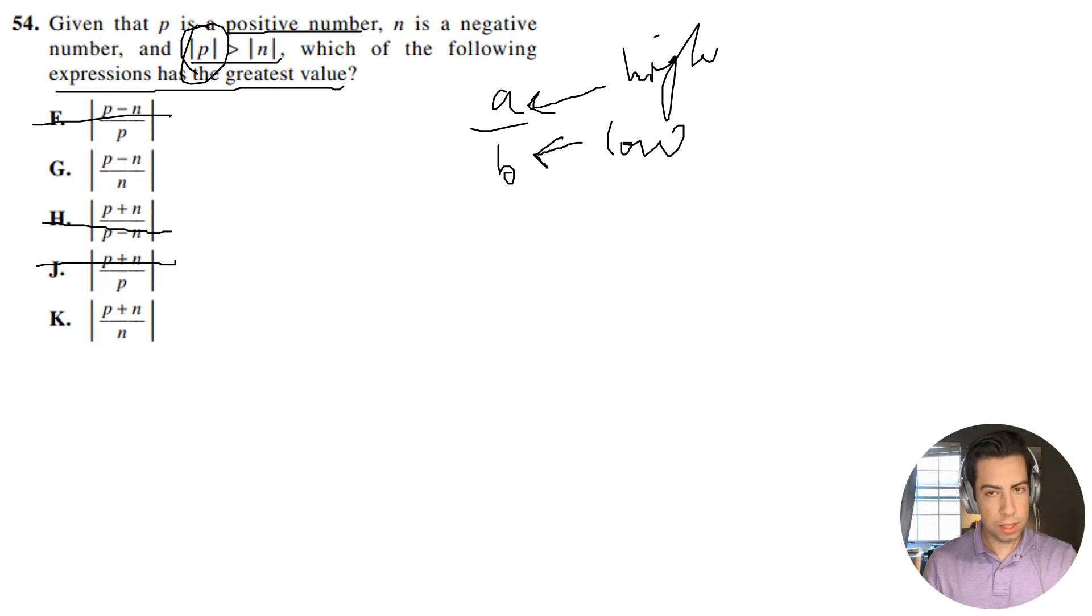Okay, so now we're left with P plus N divided by N and P minus N divided by N. So remember that N is a negative number. If N is a negative number and I have P minus N, this is really just like saying P plus N.